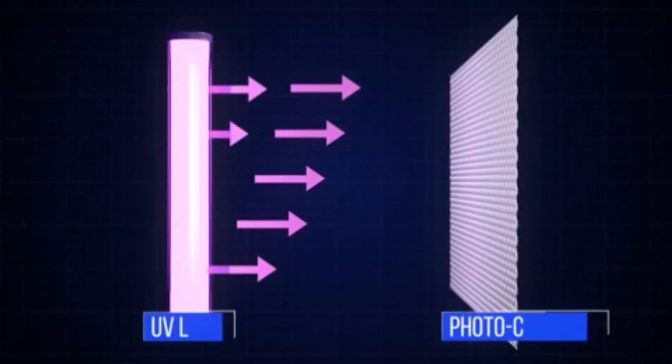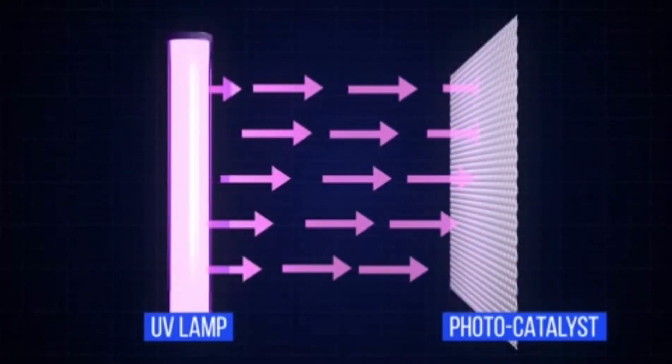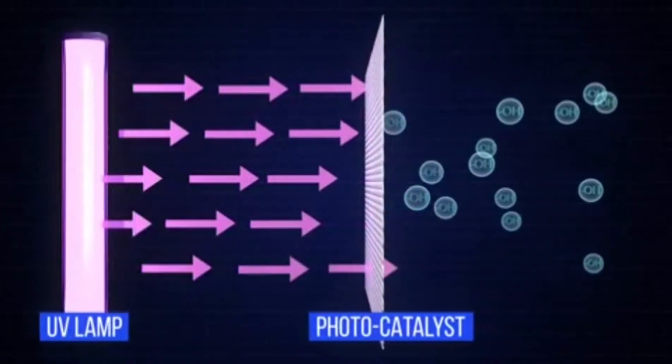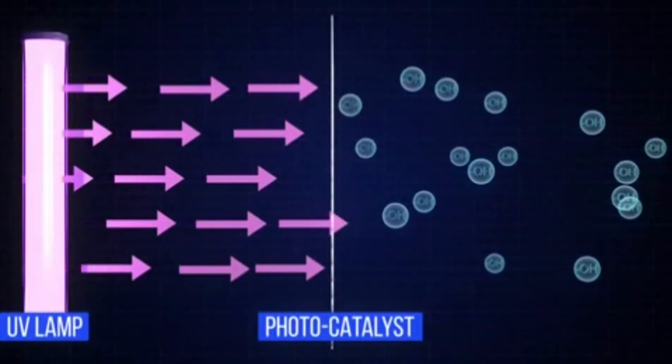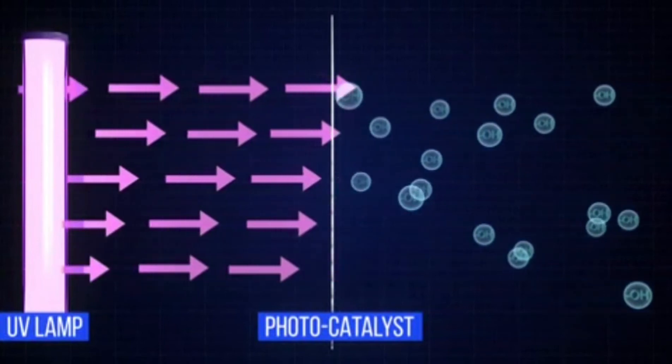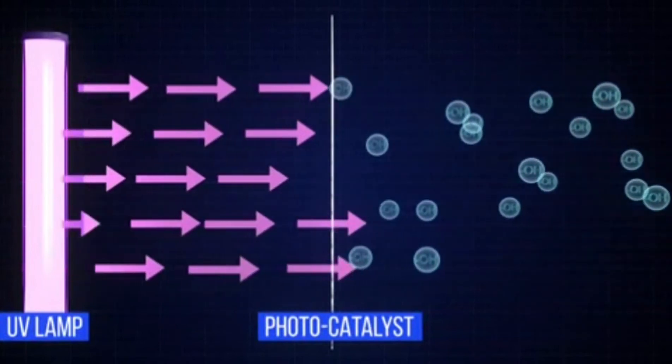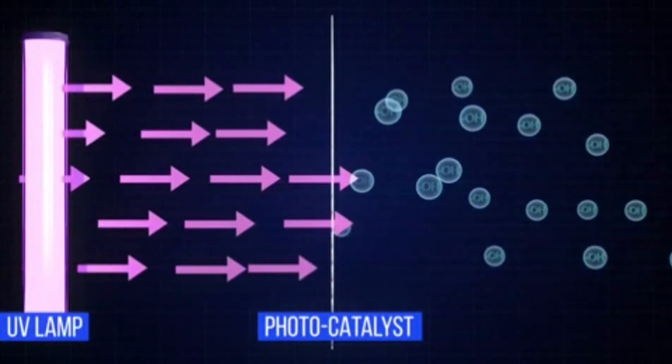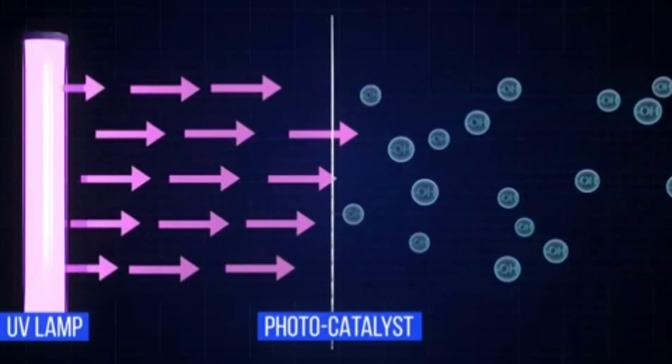Photocatalytic oxidization is achieved as UV light rays are combined with a titanium oxide TiO2 coated filter. This process creates hydroxyl radicals and superoxide ions which are highly reactive electrons.